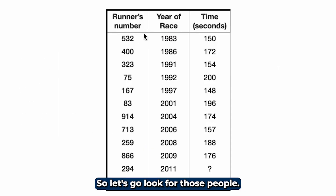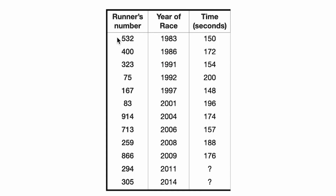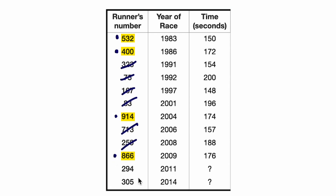Let's go look for those people. Runner number 532 — that's even, so that's a winner. 400 is even, that's a winner. 323 is not a winner. 75 is not a winner. 167 is not a winner. 83 is also odd, so not a winner. 914 is even — there's a winner. 713 is odd, not a winner. 259 is odd, not a winner. 866 is even — there's a winner. 294 is also even — there's a winner. 305 is not a winner. So my winners are the even-numbered people.